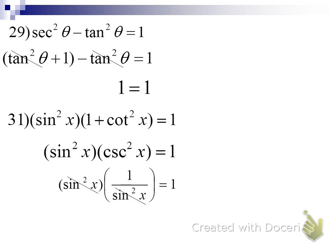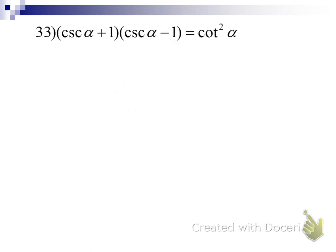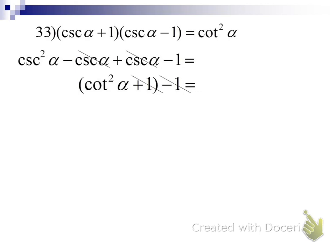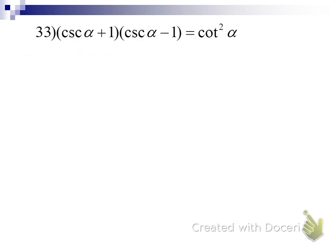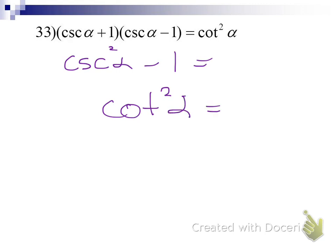Try this one on your own. A lot of you noticed quickly that what we're dealing with on the left are conjugates, and we said there's a lot of conjugate activity with difference of squares in Pythagorean identities. So: (csc α + 1)(csc α − 1) equals cosecant squared of alpha minus one. And cosecant squared of alpha minus one is one of our sub-identities — it equals cotangent squared of alpha. And we are done.